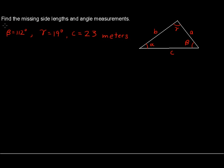Find the missing side lengths and angle measurements. Beta is 112 degrees, gamma is 19 degrees, and the length C is 23 meters.